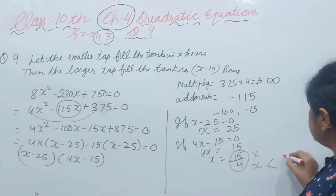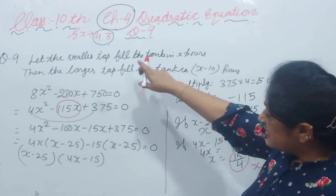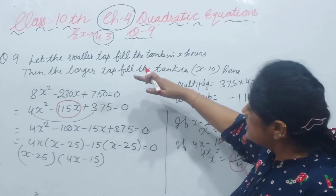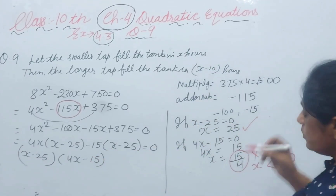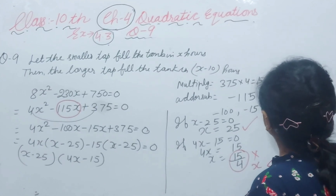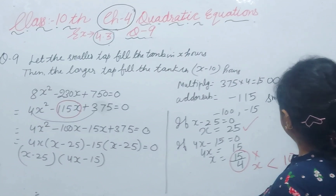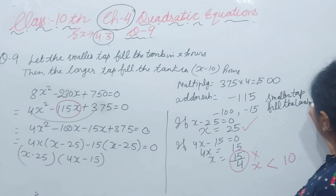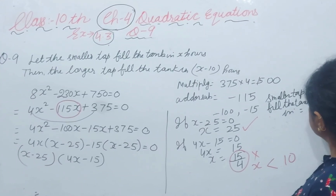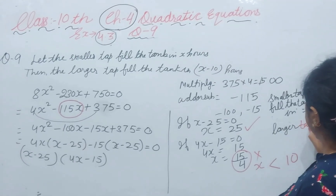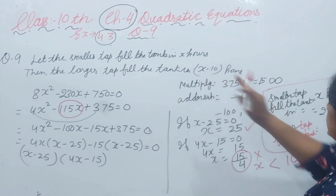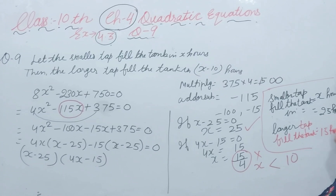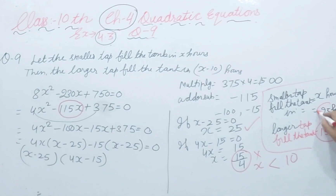The value x equals 15/4 is less than 10. Since we assumed the smaller tap fills in x hours and the larger tap takes 10 hours less, x must be greater than 10. So we neglect x equals 15/4 and take x equals 25. Therefore, the smaller tap fills the tank in 25 hours, and the larger tap fills it in x minus 10 equals 25 minus 10 equals 15 hours.